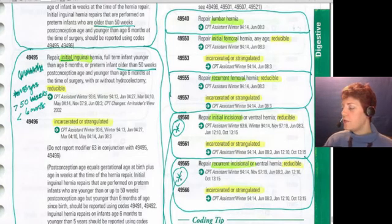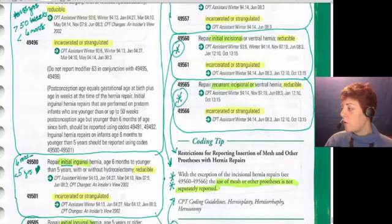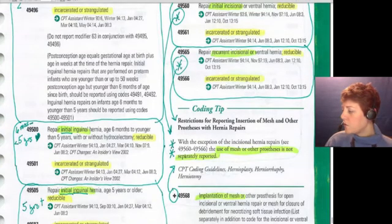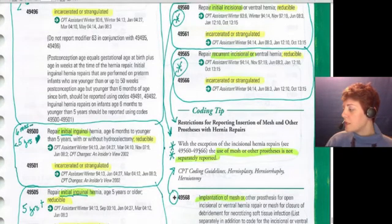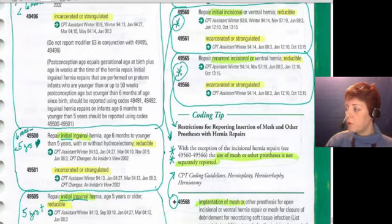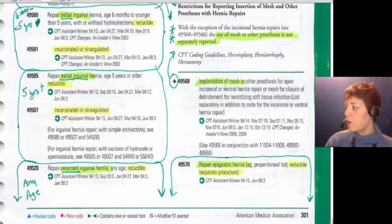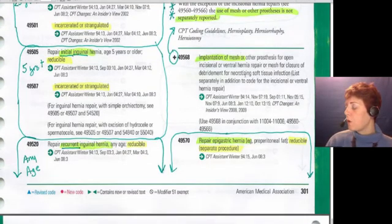Next are codes 49560 and 49565 — incisional hernias, initial and recurrent, which are ventral hernias. I've got stars here pointing down to the parenthetical note: 'With the exception of the initial hernia repairs 49560 through 49566, the use of mesh or other prostheses is not separately reported.' So MESH can be billed with those two bubbles, but everything else it's bundled. If a physician questions it, show them the CPT manual. When MESH is permitted, use add-on code 49568 — implantation of mesh or other prostheses for open incisional or ventral hernia repair.